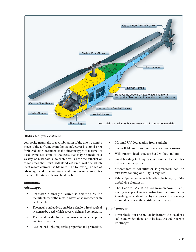Aluminum advantages: predictable strength, which is certified by the manufacturer of the metal and recorded with each batch. The metal conductivity enables a single-wire electrical system to be used, which saves weight and complexity. The metal conductivity maximizes antenna reception and transmission. Aluminum has recognizable lightning strike properties and protection, minimal UV degradation from sunlight, and controllable moisture problems such as corrosion. It will transmit loads and can bend without failure. Good bonding techniques can eliminate P-static for better radio reception. Smoothness of construction is predetermined; no extensive sanding or filling is required. Paint chips do not materially affect the integrity of the underlying aluminum. The FAA readily accepts it as a construction medium and is knowledgeable about its physical properties, causing minimal delays in the certification process.